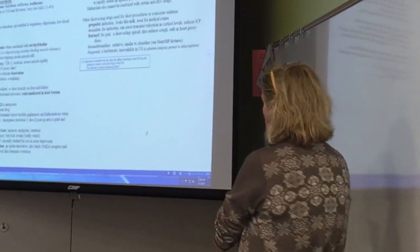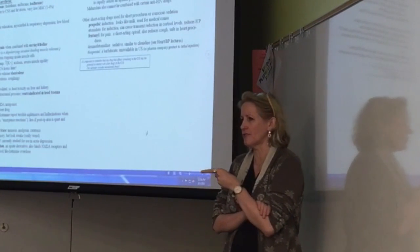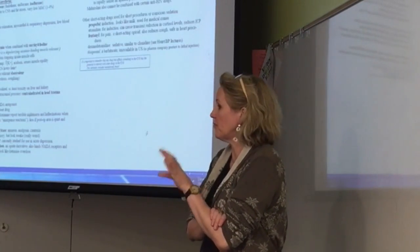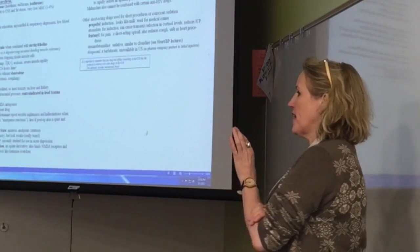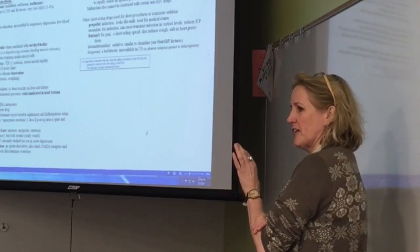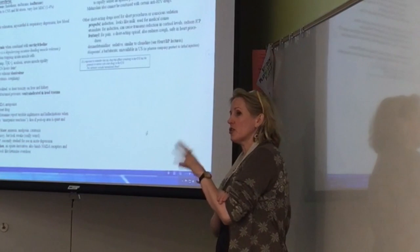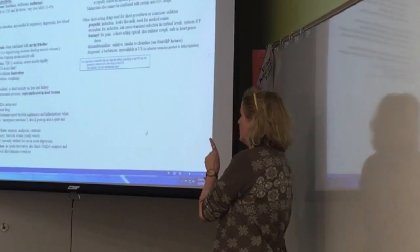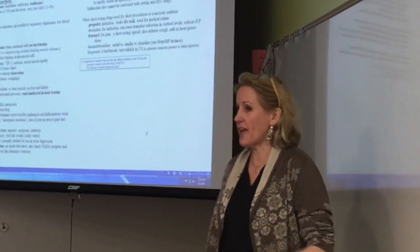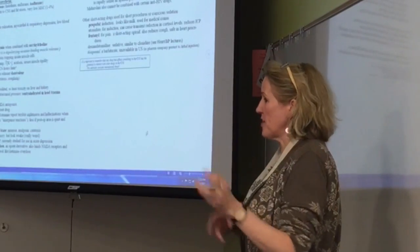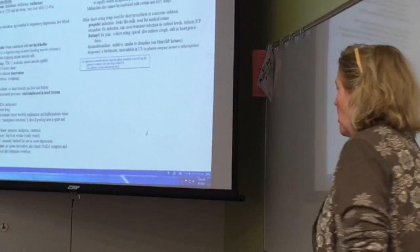Dextromethorphan — DM — found in a lot of cough syrups, has an opiate chemical family. Teenagers do 'robo-tripping' where they drink two or three bottles of Robitussin, thinking they'll get high like heroin. But there's cross-reaction with NMDA receptors, so they actually go into a dissociative anesthetic state before they stop breathing — which means they walk into traffic or fall off things.